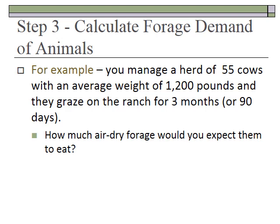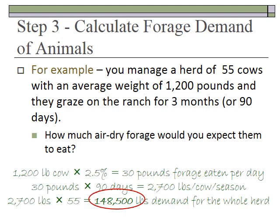For example, suppose you manage a herd of cows with an average weight of 1,200 pounds and they graze the ranch for 90 days. Each cow eats two and a half percent of its body weight, so about 30 pounds of dry matter forage each day. 30 pounds times 90 days equals 2,700 pounds per cow per season. If you had 55 cows, that gives 148,500 pounds for the whole herd. That's a rough ballpark estimate of how much forage you're going to need.